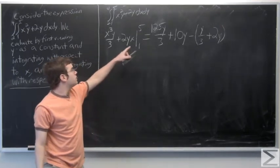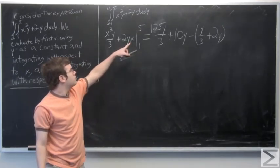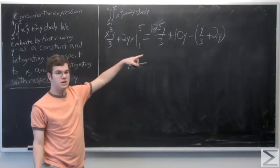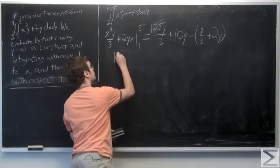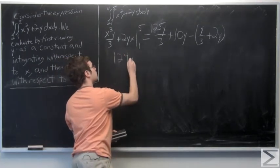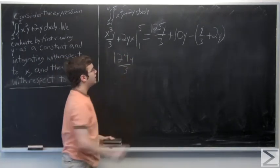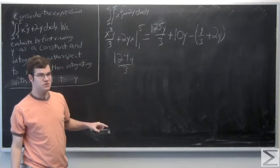So now, when finding this, we say that 125 minus 1 is 124 over 3. And 10y minus 2y is 8y.